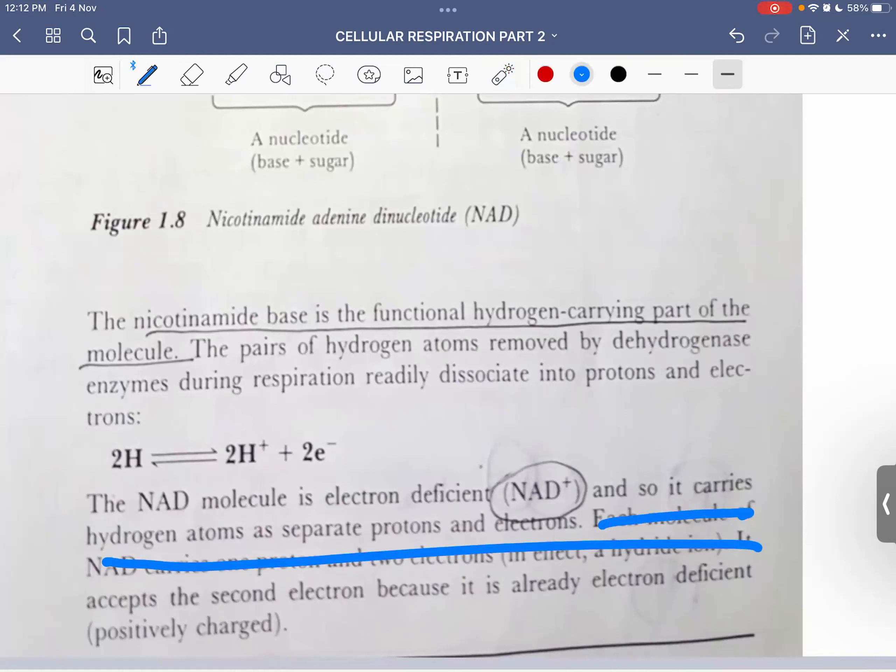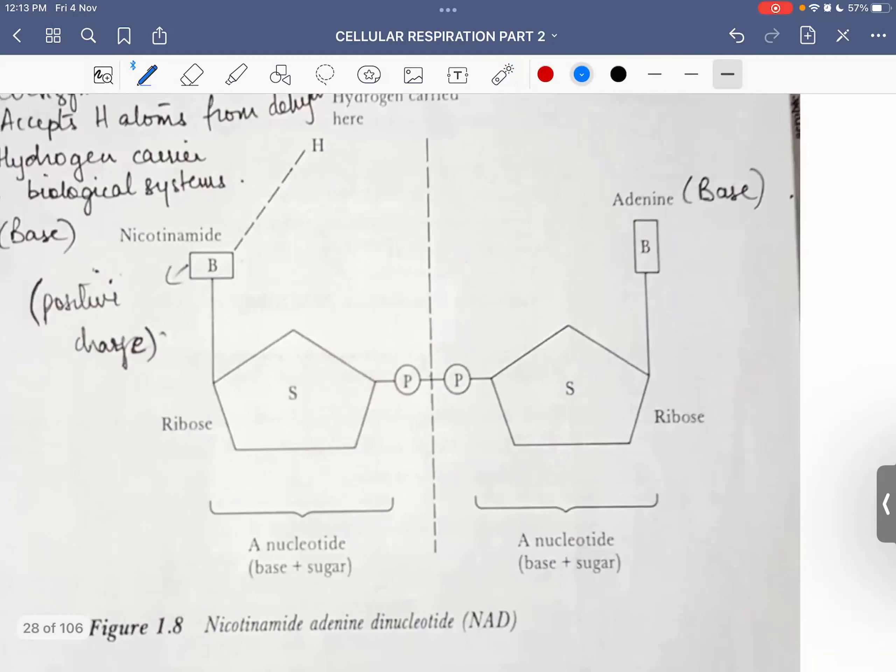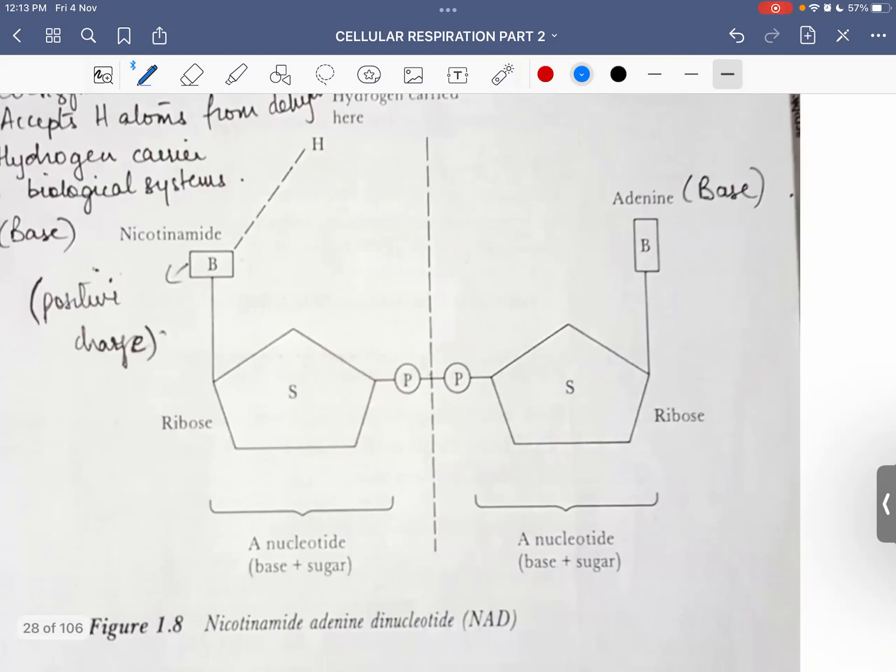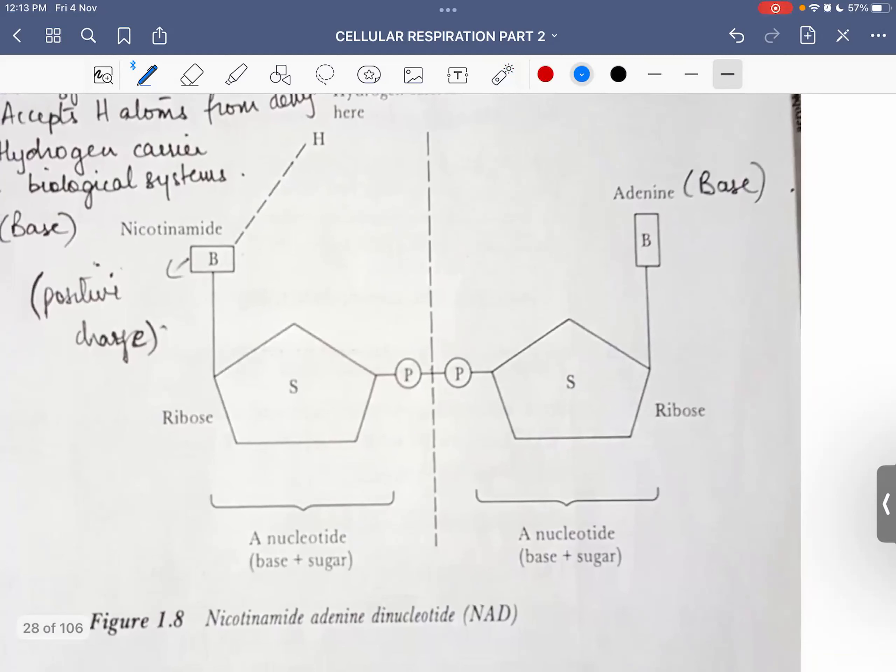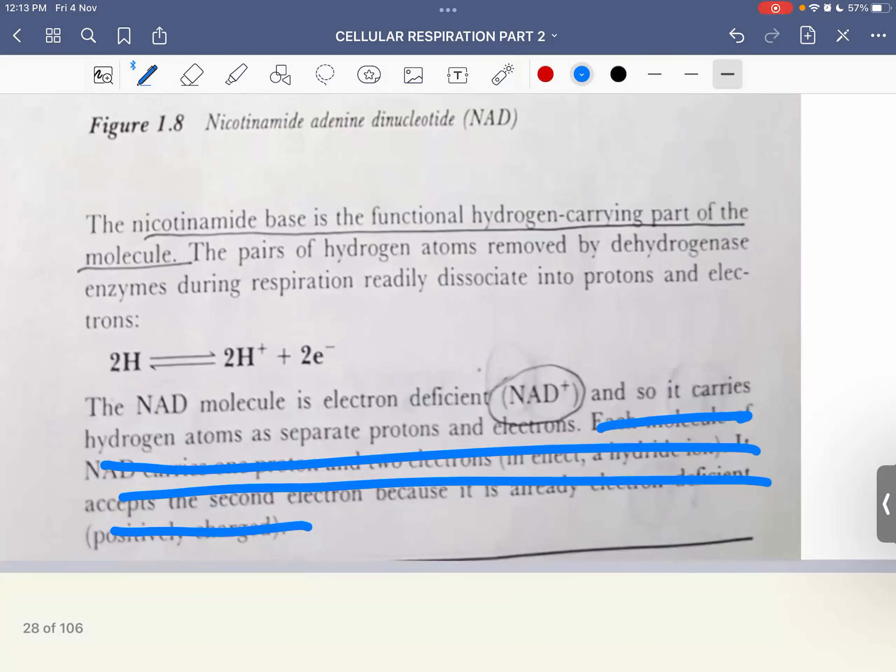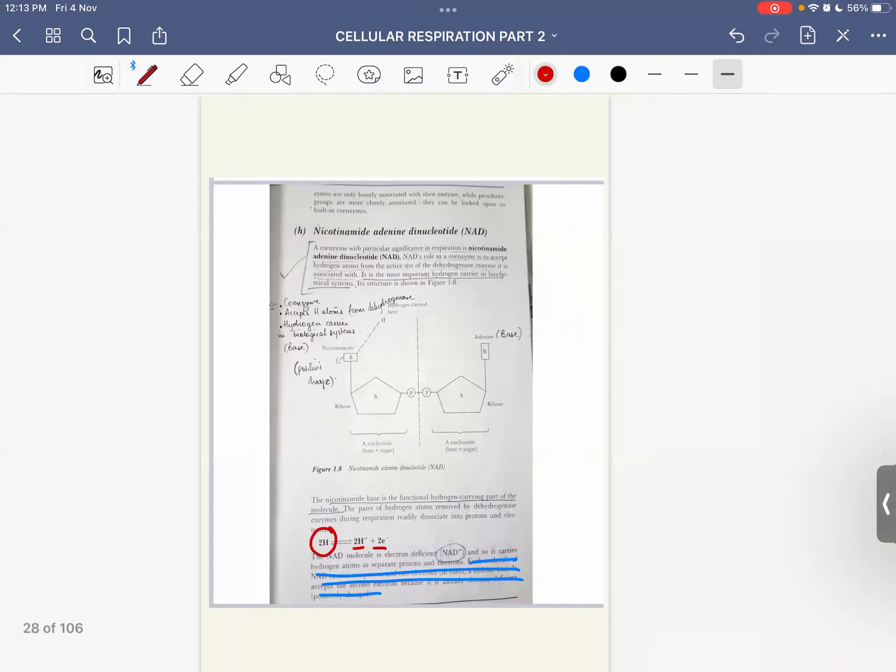What happens is that the NAD molecule by default is electron deficient, and so it carries hydrogen atoms as separate protons and electrons. Each molecule of NAD carries one proton and two electrons in effect.